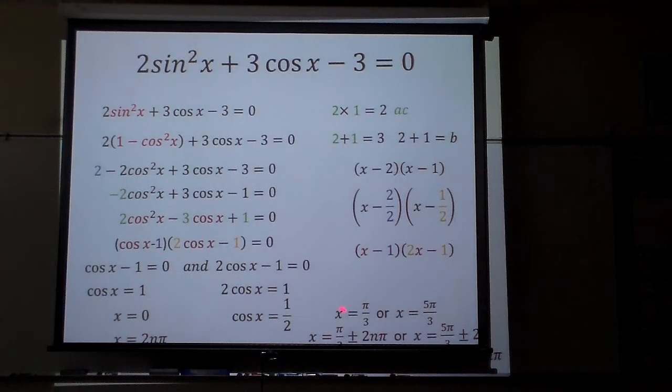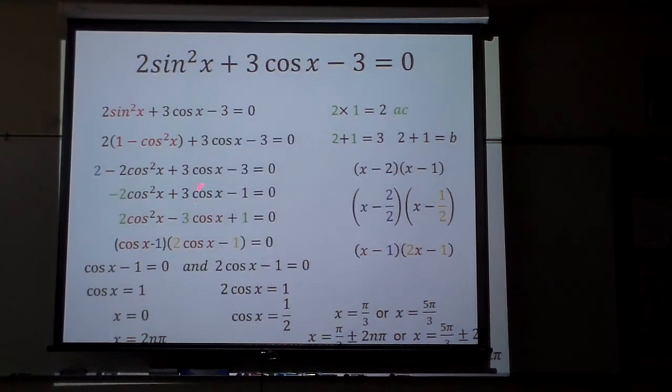So the answer was basically 0 pi over 3, 5 pi over 3. Plus or minus the 2n pi's on all those particular answers. But I had to use an identity to get it to the same thing or something I could factor to where I could work with it.